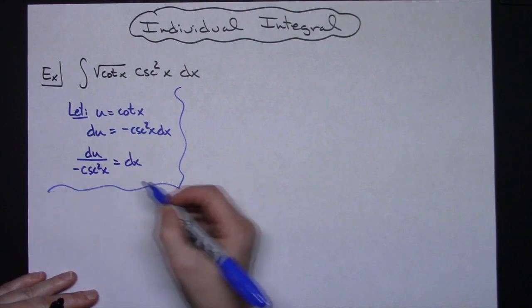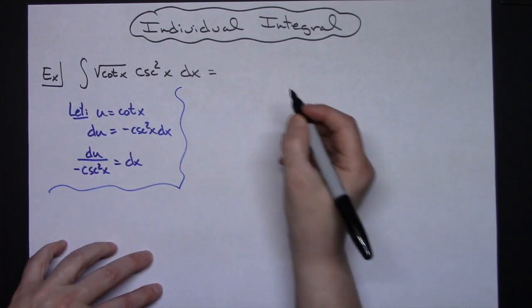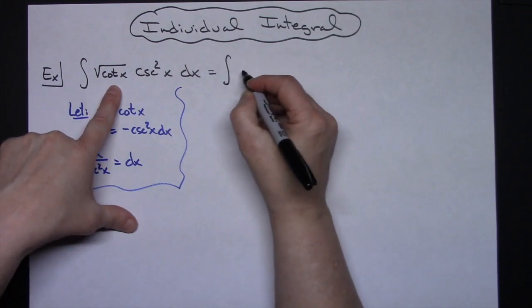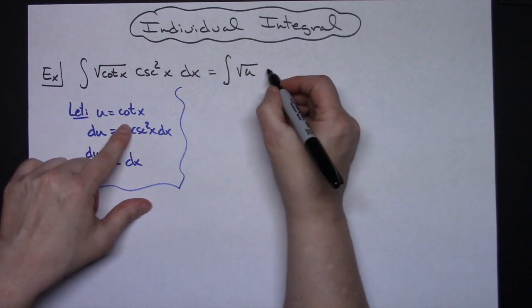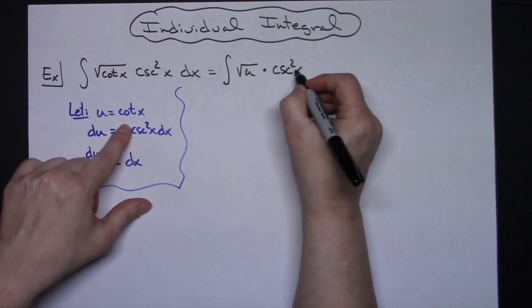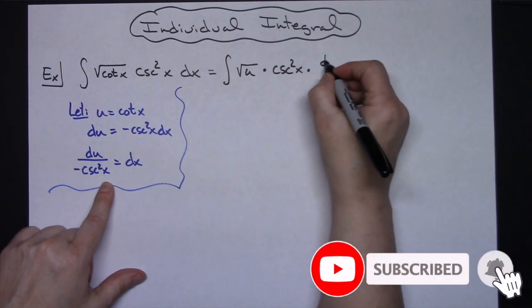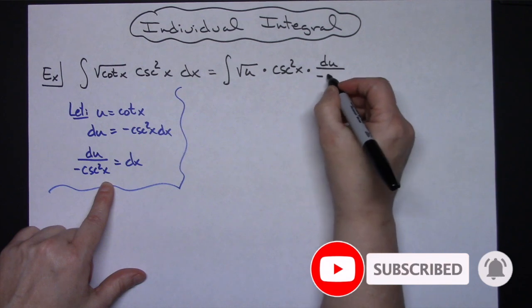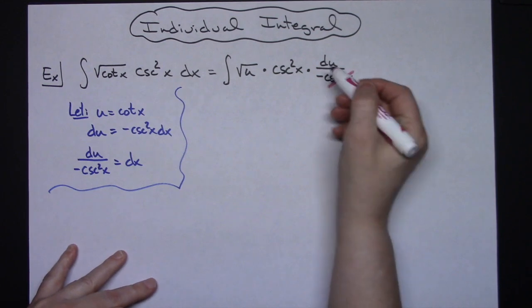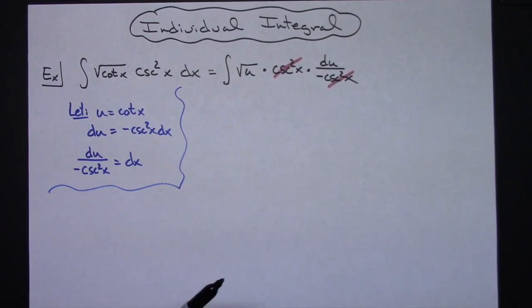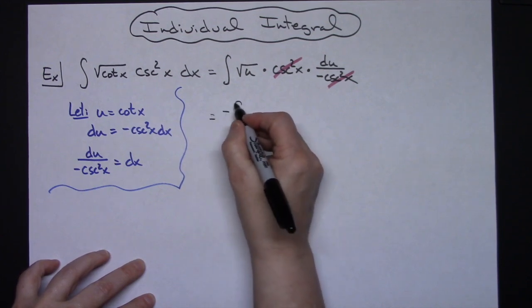Coming up to the original equation and making substitutions, we'll have the integral of the square root of u, with cosecant squared x still there, and replacing dx with du over negative cosecant squared x. That will nicely let those cosecant squared x's cross out, and I'll be able to pull that negative out in front, giving negative the integral of the square root of u du.